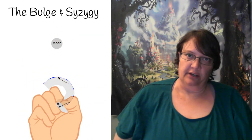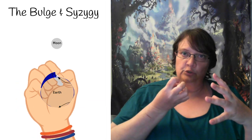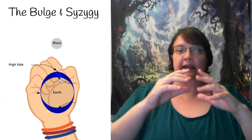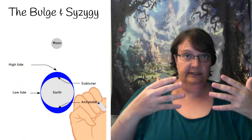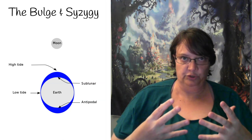First you have to understand how tides in our world work. The moon exerts a gravitational force on the earth which causes the oceans to bulge as they are pulled towards the moon. As the earth rotates, it goes through the high tide and low tide effect as it moves through that bulge.